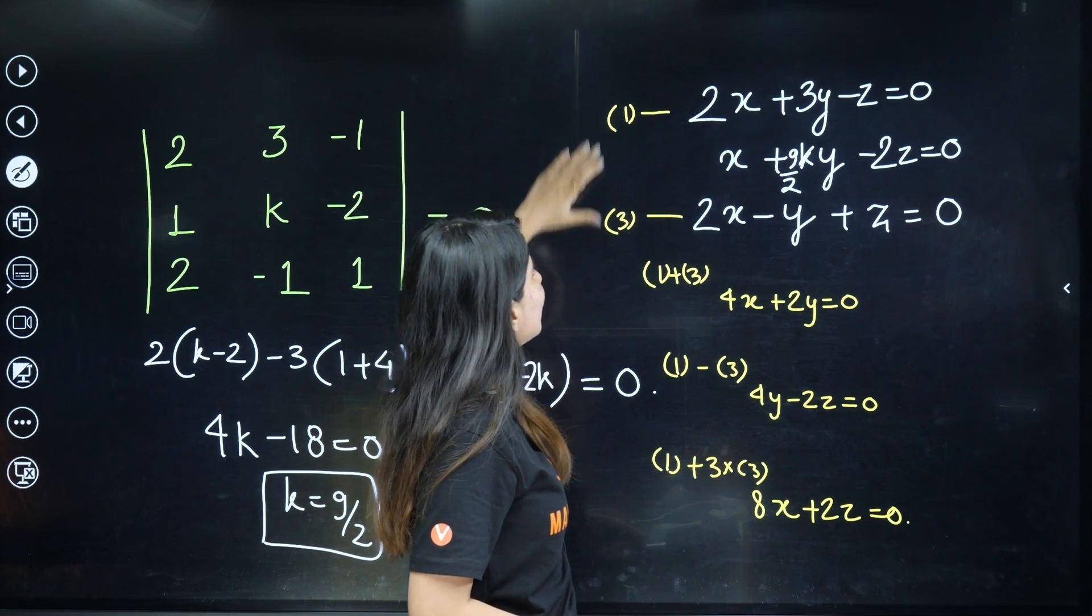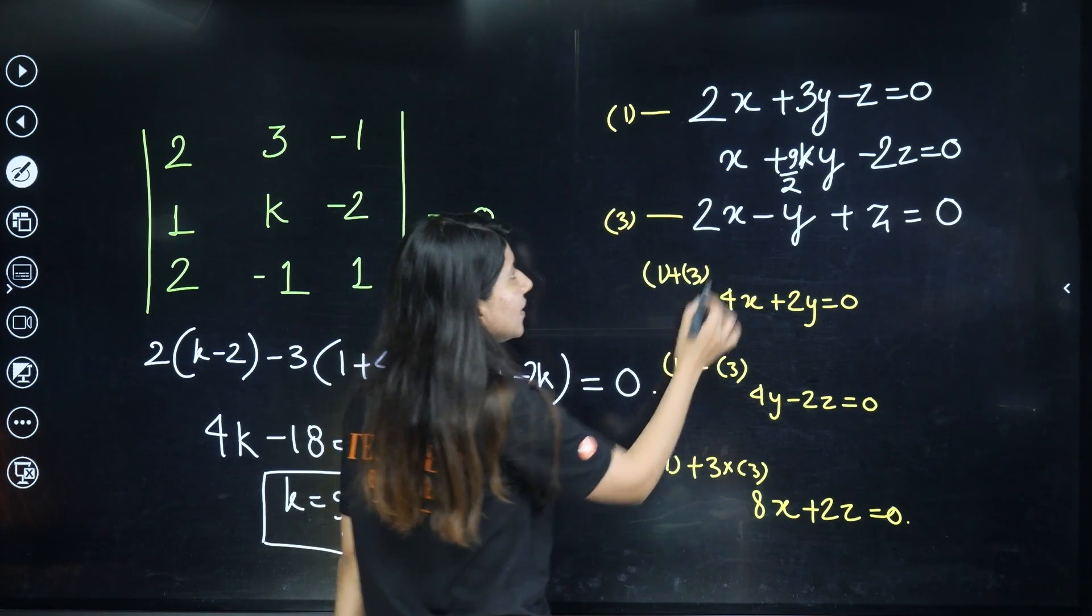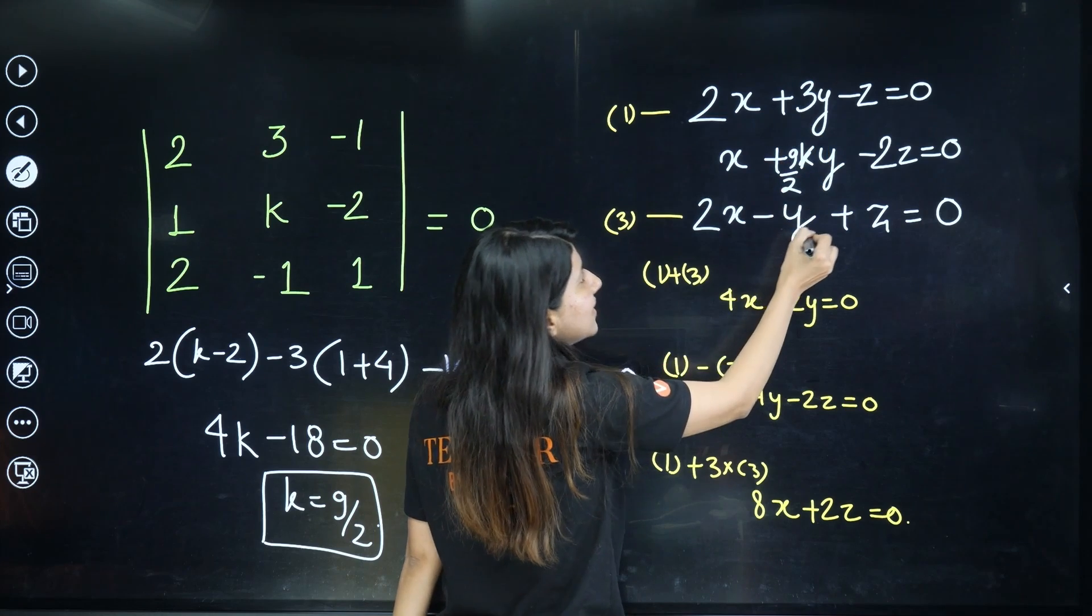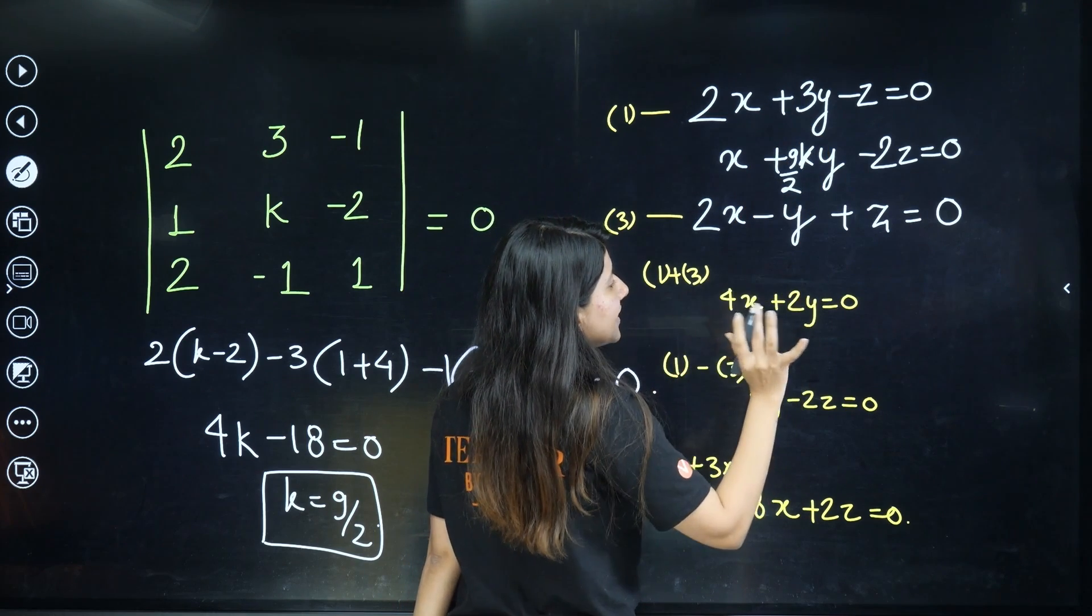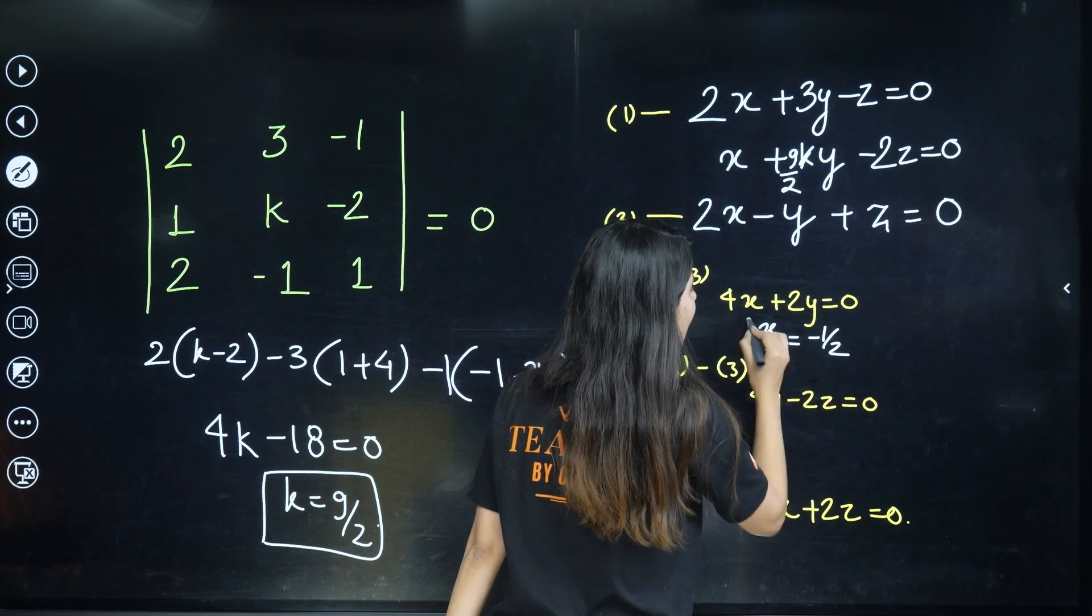z and z will get cancelled out. So the moment you add first and third, you will get 4x plus 2y and z will be gone. So x/y will be equal to -1/2, isn't it?